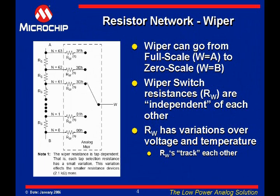The wiper switch is like a large analog MUX. Each gate of this analog MUX will have slightly different characteristics, which causes a difference in resistance between any two wiper switch positions.